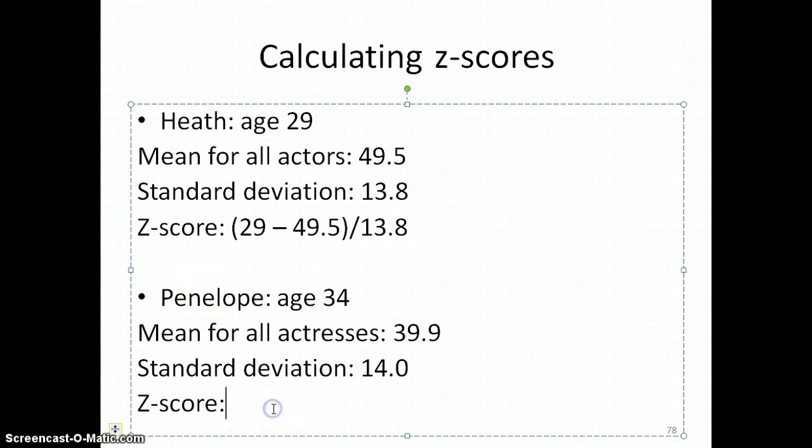For Penelope, for her z-score, we take her age, subtract out the age for the average actress, and then divide by that standard deviation. Again, I'm putting parentheses because you want to make sure you subtract before you divide.